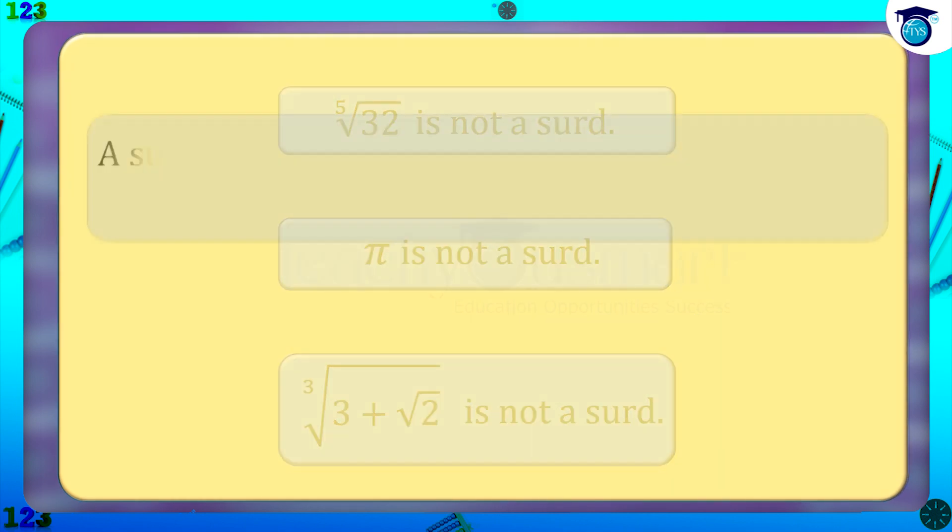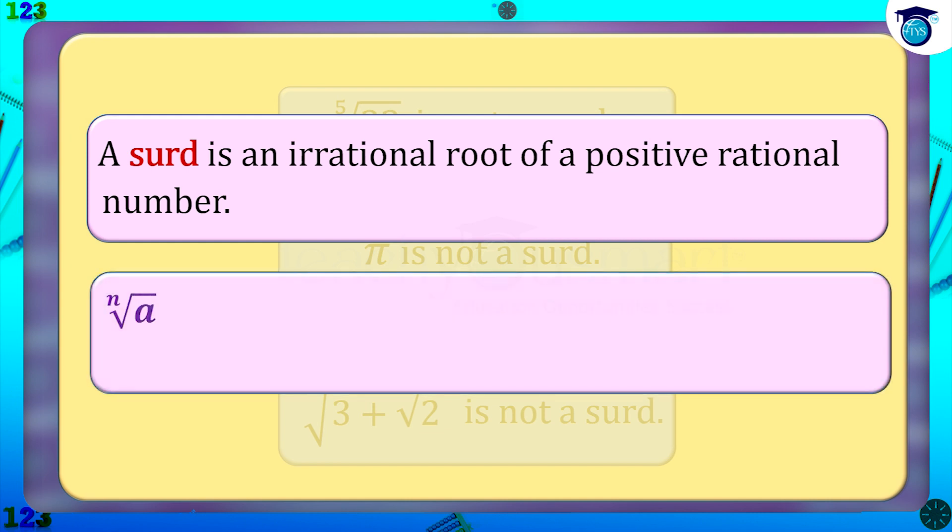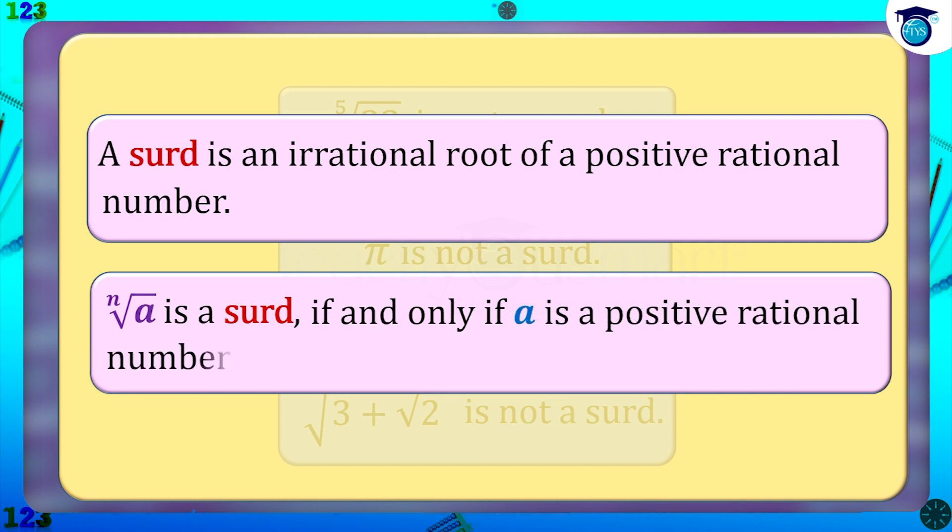Hence, a surd means it is an irrational root of a positive rational number. That is, nth root of a is a surd if and only if a is a positive rational number and nth root of a is an irrational number.